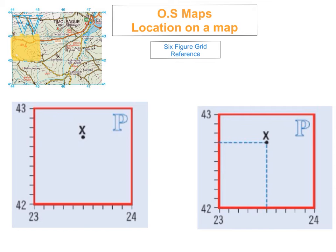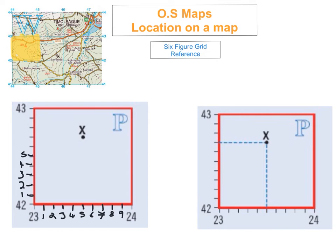To do six-figure grid reference, what you have to do is break each of your squares up into tenths. So going along the bottom you count one, two, three, four, five, six, seven, eight, nine — and ten is just zero. It's exactly the same going up the side: one, two, three, four, five, six, seven, eight, nine — and ten is zero at the top.